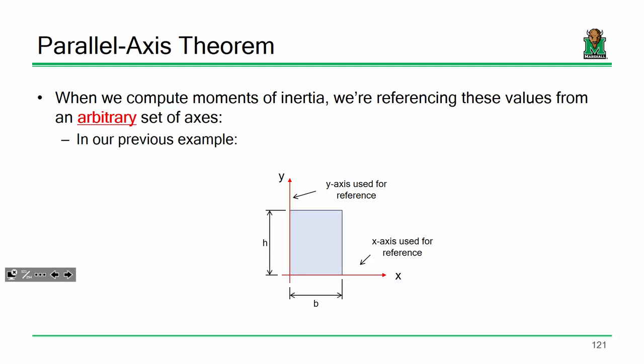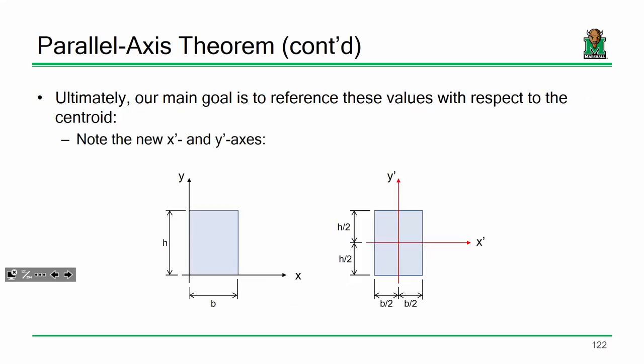Now with the axes at the centroid, instead of going from y = 0 to y = h, my limits change to y = −h/2 to y = +h/2. The integral of y²·b dy, factoring out b, gives b·(y³/3) evaluated from −h/2 to +h/2. Plugging in: h/2 cubed is h³/8, and negative h/2 cubed is −h³/8, so subtracting gives 2·(h³/8) = h³/4, times b/3 yields bh³/12. The difference from bh³/3 was our frame of reference — centroidal axes give bh³/12.